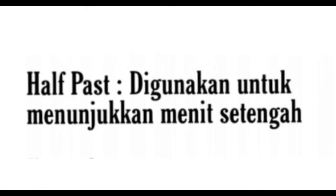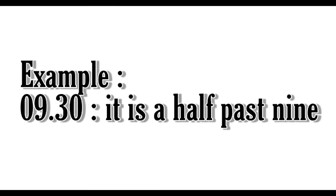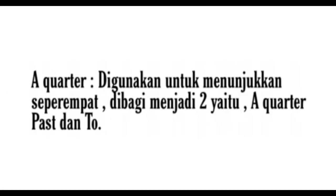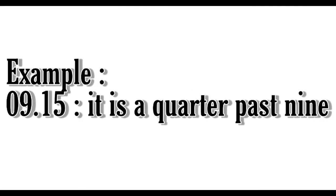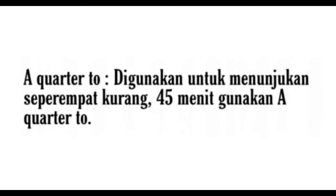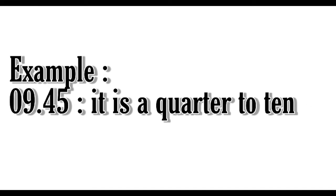Half past is used to indicate half past the hour. Example: It is half past 9. A quarter is used to indicate a quarter of an hour, divided into two: a quarter past and a quarter to. A quarter past is used for the first 15 minutes. Example: It is a quarter past 9. A quarter to is used for 45 minutes. Example: It is a quarter to 10.